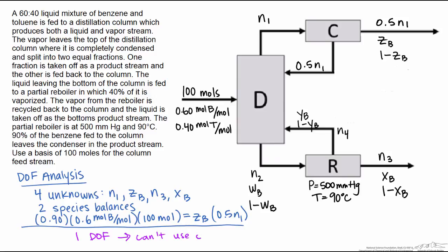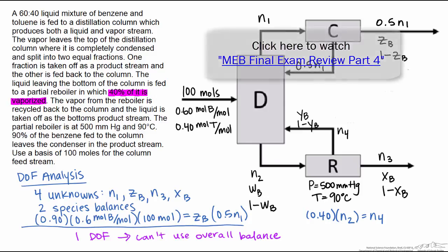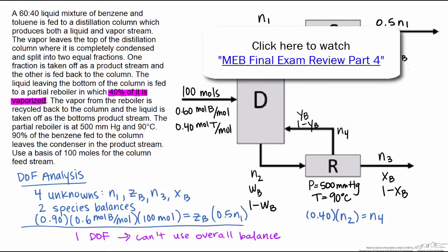One thing that I want to make sure that you understand, we have a second piece of information right here which says 40% of the liquid leaving the bottom of the column is vaporized. The way we would write that is 40% of the liquid leaving the column, which is N2, is vaporized, which is equal to N4. The reason we can't use that piece of information is that it does not relate to any of the variables that we're trying to solve for. So in the next screencast, we'll show you where we have to start in order to solve this problem.